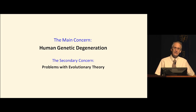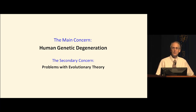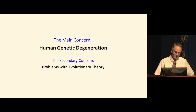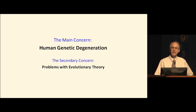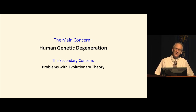I'd like to distinguish the main concern and the secondary concern. I originally got involved in this research because I was interested in the question: what can mutation plus selection do? That involved evolutionary theory and problems with evolutionary theory. But as I've gotten deeper into the topic, more and more I've realized genetic degeneration is a very serious concern for the human race. Mutations are catastrophic. I'd like to put addressing the concern of human genetic degeneration and what we might do to slow it down as the primary concern.